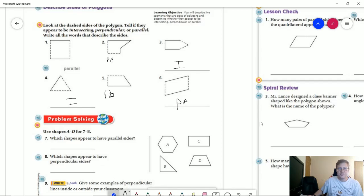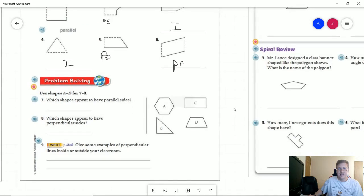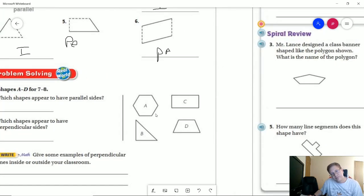For number seven, which shapes appear to have parallel sides? Shape A does, shape C does, and shape D does with the top and bottom, so ACD.